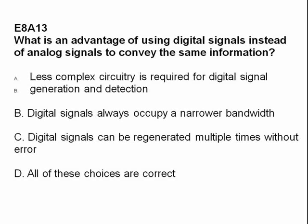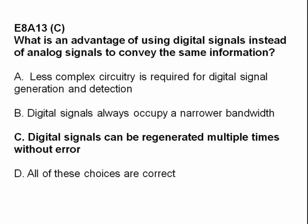What is an advantage of using digital signals instead of analog signals to convey the same information? A: less complex circuitry is required; B: digital signals always occupy a narrower bandwidth; C: digital signals can be regenerated multiple times without error; or D: all of these choices are correct. The answer is C — digital signals can be regenerated multiple times without error.